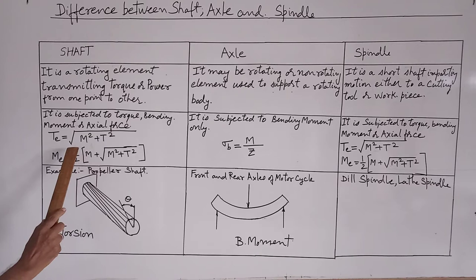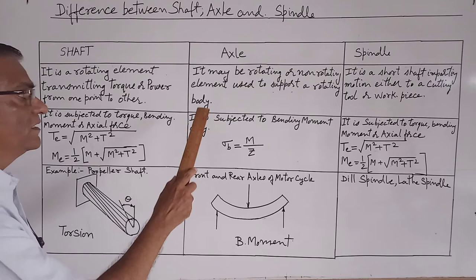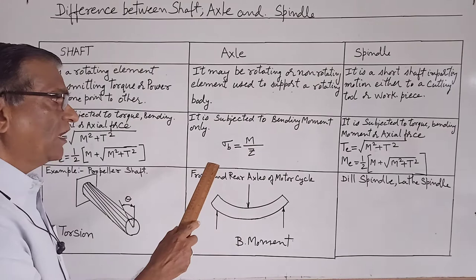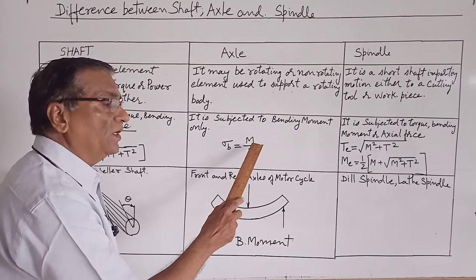Whereas the axles are subjected for pure bending and the bending moment or the bending stresses may be calculated by the formula sigma B is equal to M upon Z.